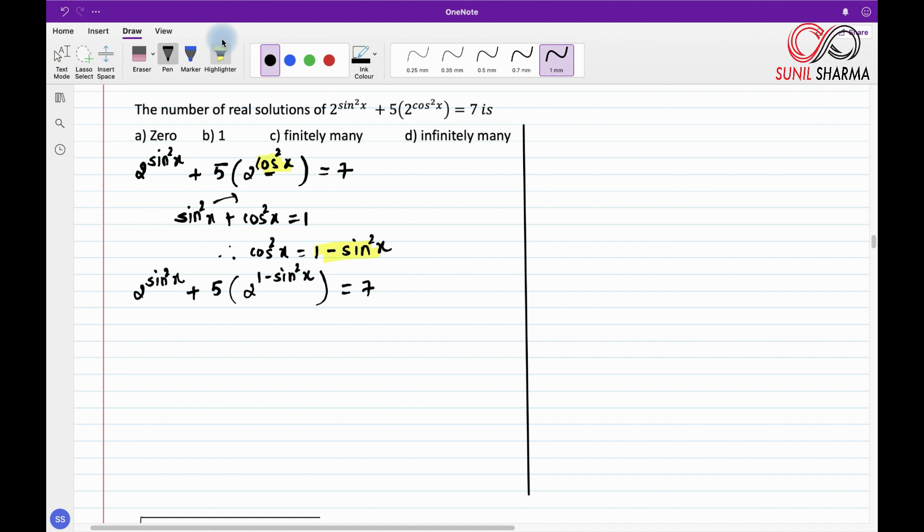Now observe this part. This here we are going to use law of indices. Which property are we going to use? The very simple property: a^(m-n) can be written as a^m upon a^n. That is, minus n when we take it on the denominator we get a^m. We are going to do that to this 1 - sin²x.